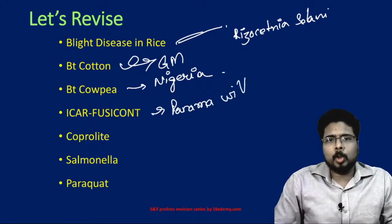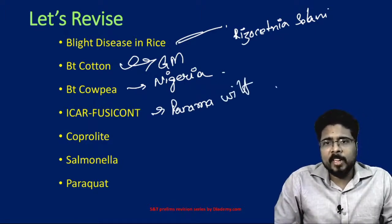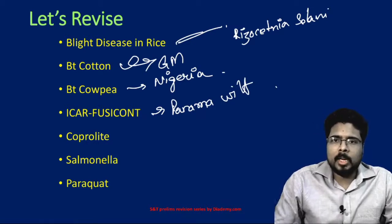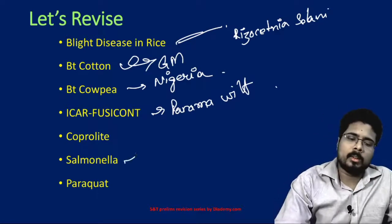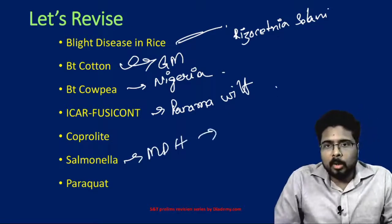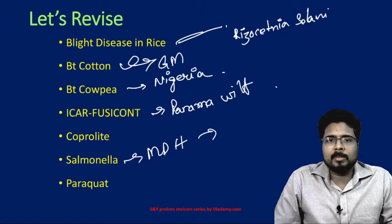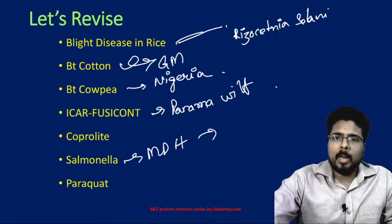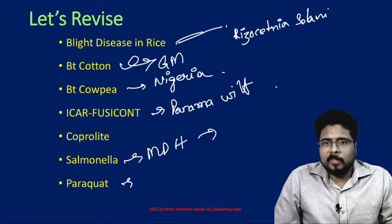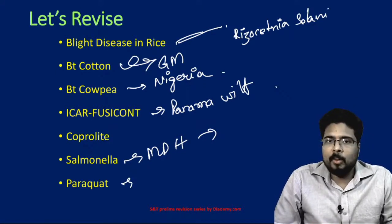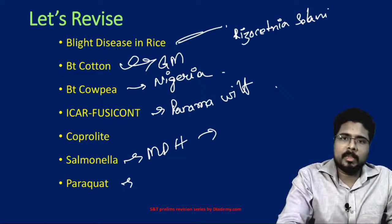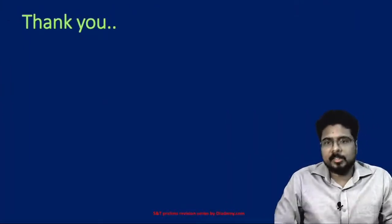Coprolite is the fecal remains of dead and fossilized animals. Salmonella was found in MDH masalas in the US — salmonellosis is a foodborne disease. Paraquat is a herbicide killer; recently there were many cases in the Supreme Court for the ban of paraquat. That's it for this lecture — see you in the next one. Keep studying and stay tuned.